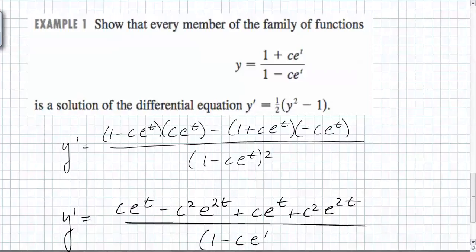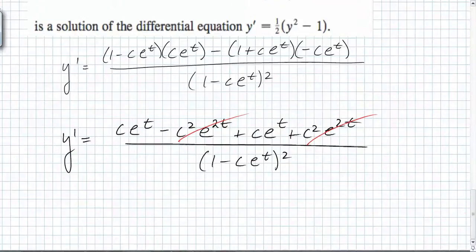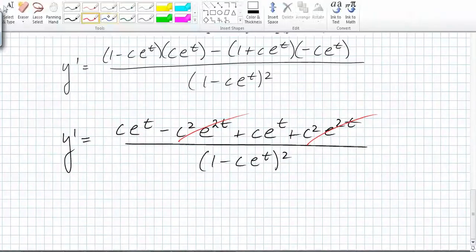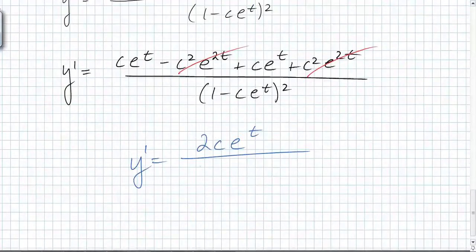One minus. What's nice about the numerator? Yeah, and what are you left with now? 2c e to the t all over one minus c e to the t squared.